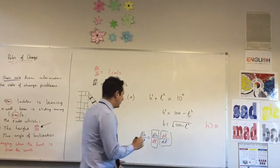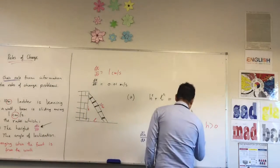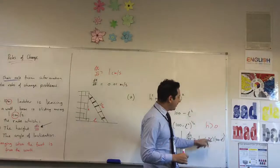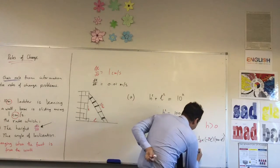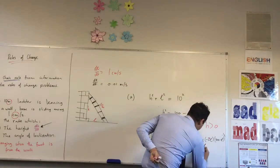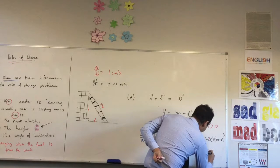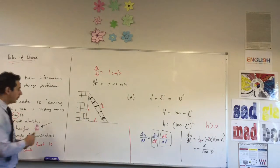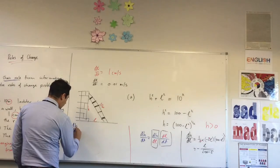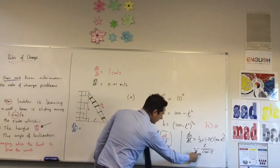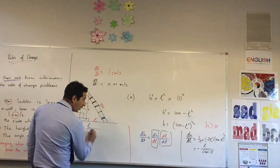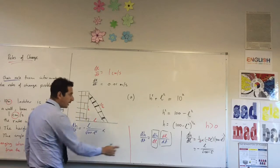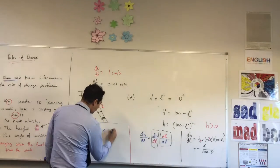So let's do it. I'm going to go dH/dL equals negative L over square root of 100 minus L squared. So dH/dt equals dH/dL, well that's just that, minus L over square root of 100 minus L squared times dL/dt, well that's just that, times 0.01.